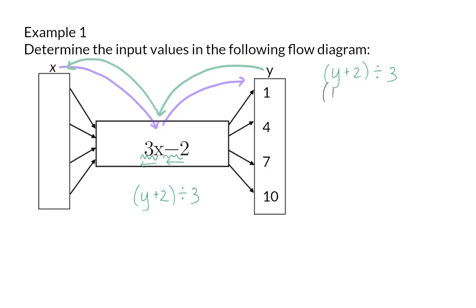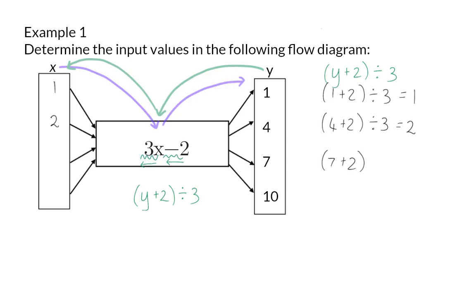So first off I will substitute the y value of 1 to get 3, and this 3 is divided by 3 to get my first input value of 1. Next I'm going to substitute 4 and then add 2 to get 6. This 6 has to be divided by 3, and this will give me a value of 2 as the input. If I then substitute 7 and add 2 I will get 9, which I'd need to divide by 3, and this will give me an input value of 3.